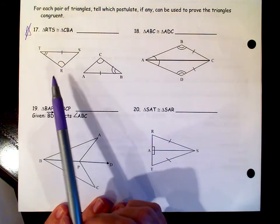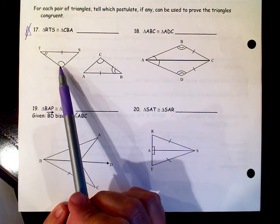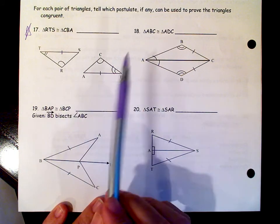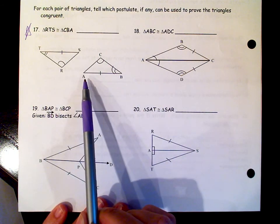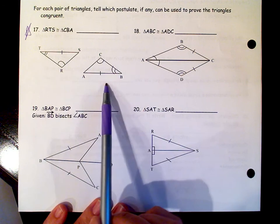So number 17, we are asked to prove that triangle RTS is congruent to triangle CBA. So first we look to see what are their congruent parts.